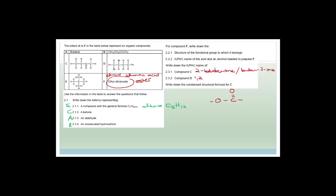To name compound D: first identify the main chain, then number from the end closest to the nearest branch or functional group — that gives positions 1, 2, 3, 4. There are two bromines, so you need to state their positions: 1,2-dibromo, and the chain is butane, giving 1,2-dibromobutane. The condensed structural formula for compound C is CH₃CH₂COCH₃.